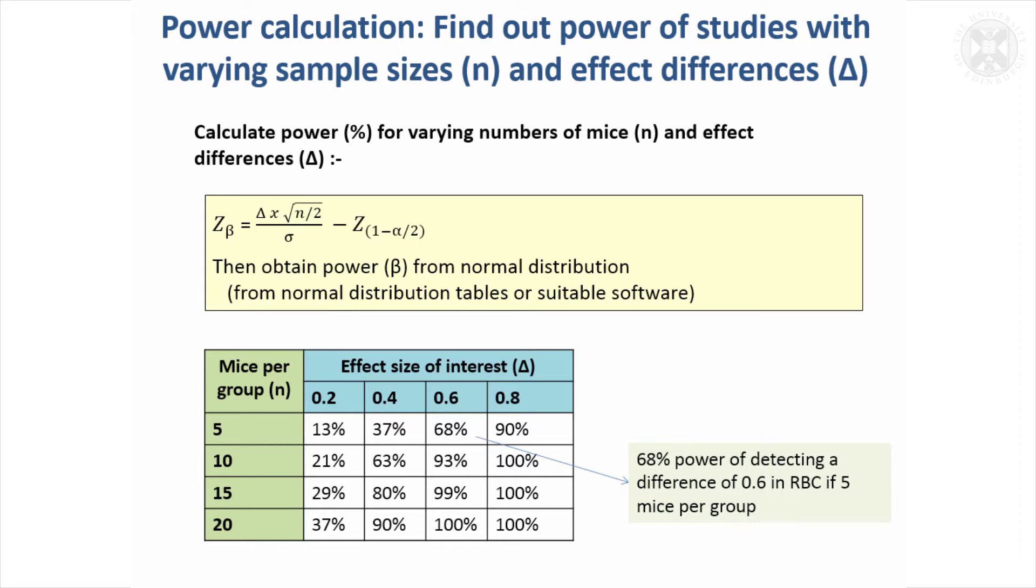Power is very low if you're looking at a small effect size, as low as 13%. Really not worth doing the study in fact for any of these group sizes. Even with up to 20 mice, the study would be quite underpowered to detect a statistically significant difference.